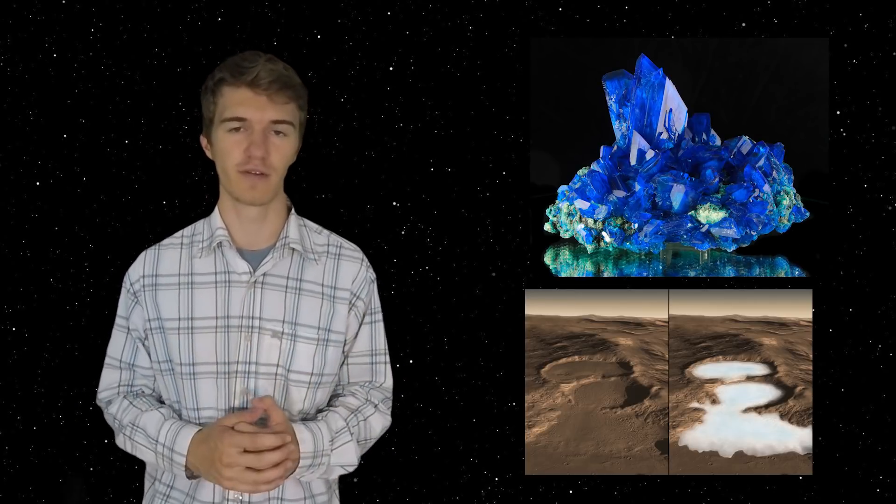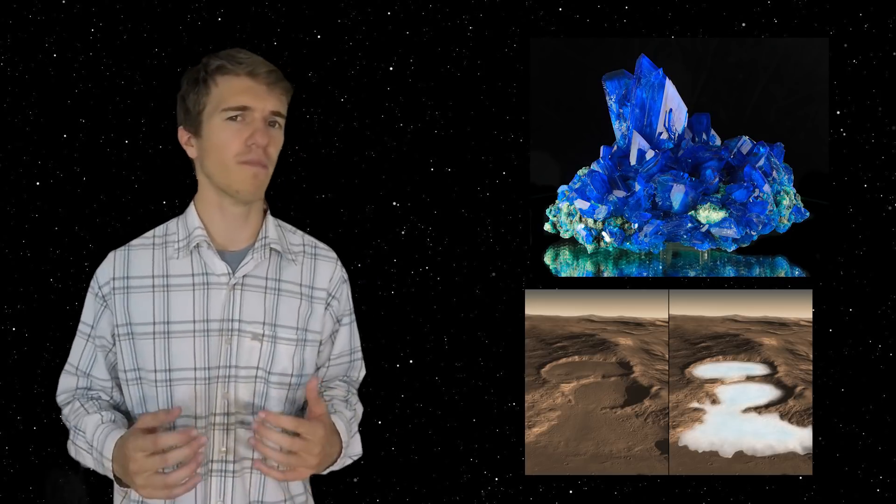However, due to the unstable climate near the poles, we have to be able to stay closer to the equator. So we have this fine balance of wanting to be close to the equator. However, that's where less water actually exists. But let's assume that we can find a location that either has hydrated minerals or ice underneath the surface. How are we going to mine that?